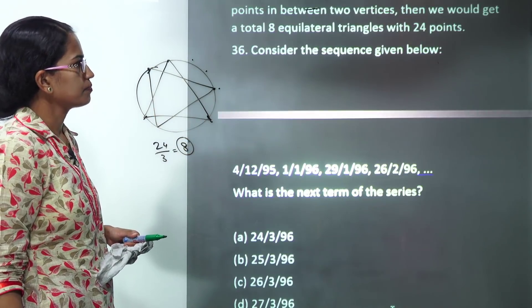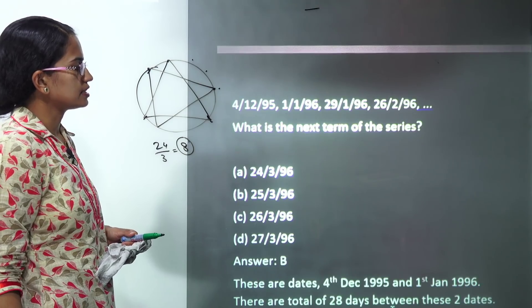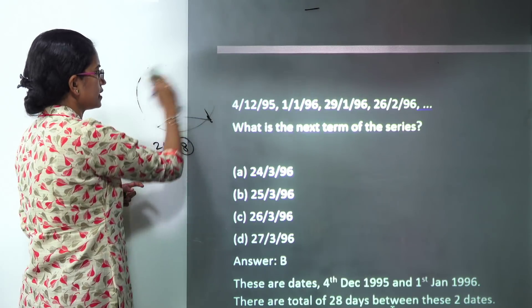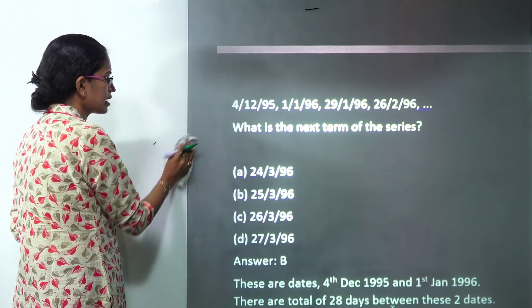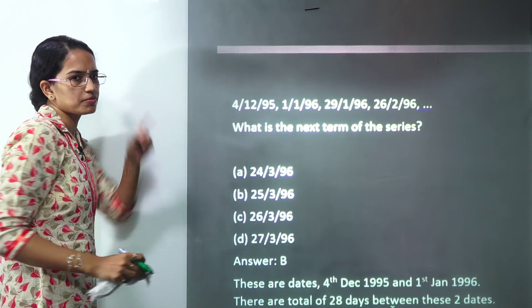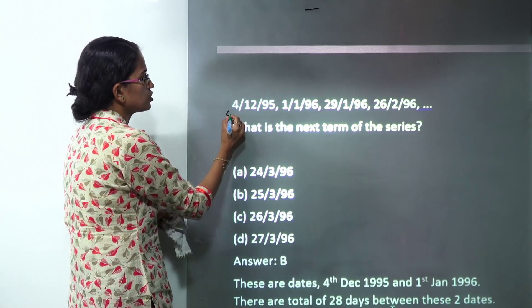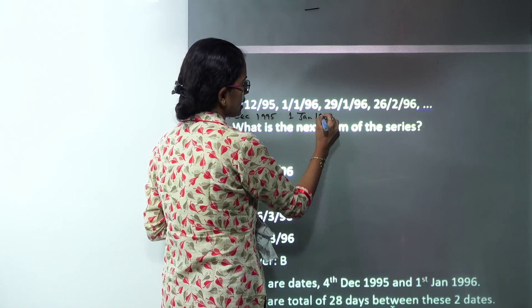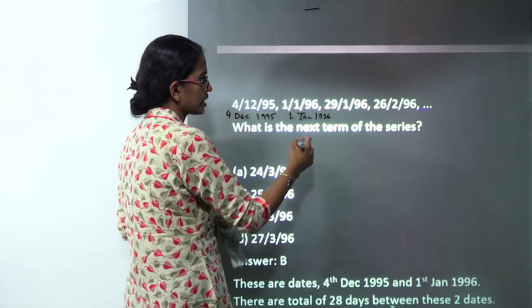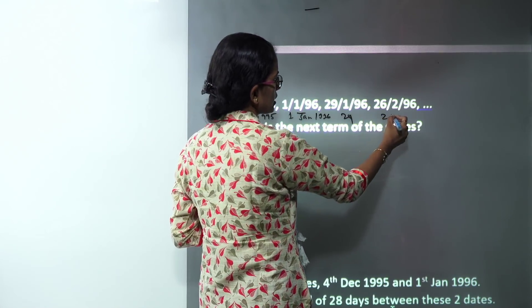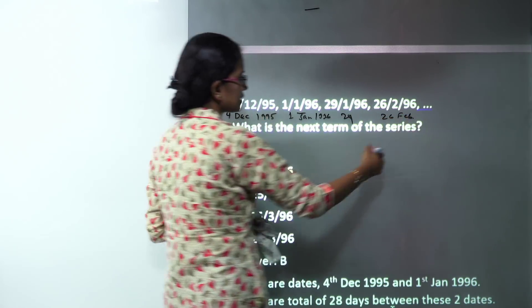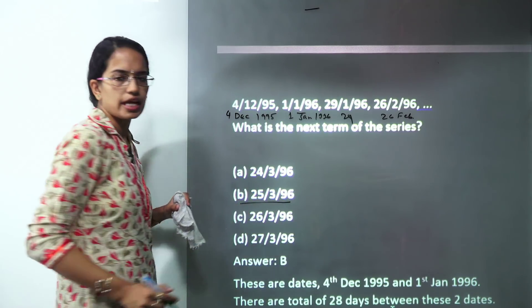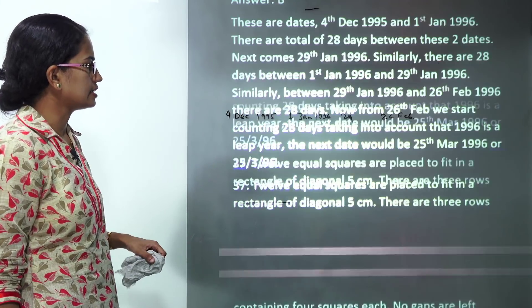The next is considering the sequence that's given here, which of the following would be the next term. Now this is very simple. If you are solving it considering a kind of number series problem you will get stuck. But this is a kind of date series. So 4th December 1995, 1st January 1996 have a difference of 28 days. Then 29th January 1996, 26th February 1996 and again I add 28 days. So that becomes 25th March 1996. So B becomes my correct answer here.